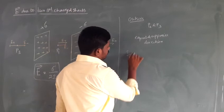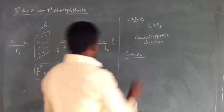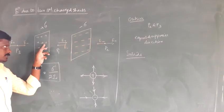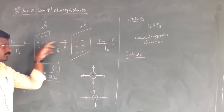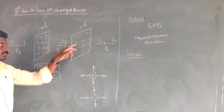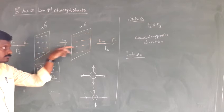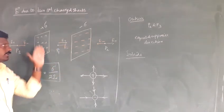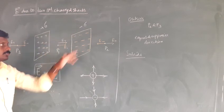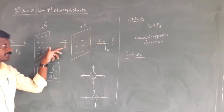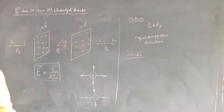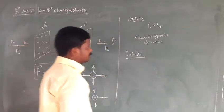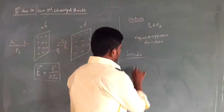Inside the plate at point P1: due to the positive charge, the electric field points outwards. Due to the negative charge, the electric field points inwards — that is towards the plate. So inside the plate, the positive charge gives electric field outwards, and the negative charge gives electric field inwards. The total electric field is E plus plus E minus.